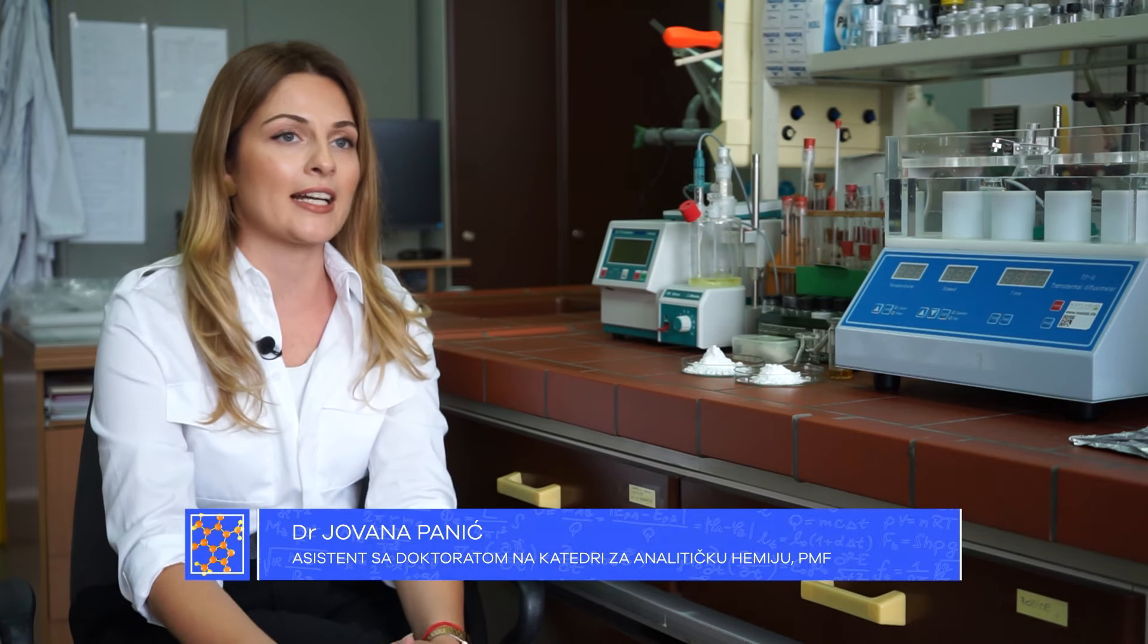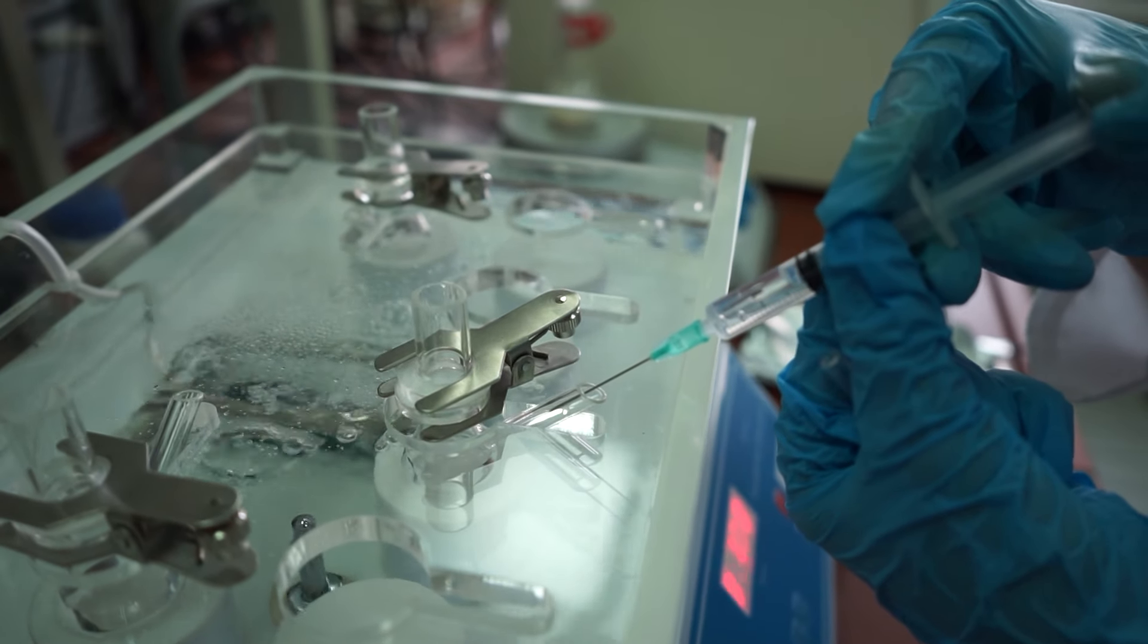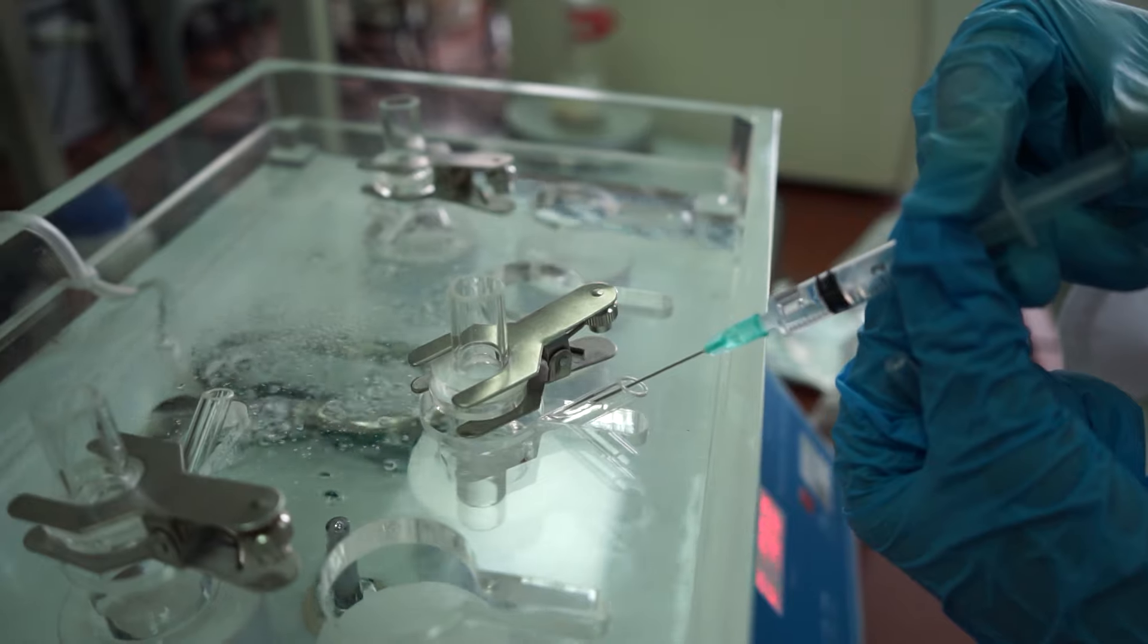Ionske tečnosti s druge strane koriste organske jone koji su različitih dimenzija, različitih oblika, i oni ne mogu blisko da priđu jedno drugom, ne mogu da ostvare jake interakcije i ostaju tečni na nižim temperaturama, prvenstveno na sobnoj temperaturi. To možemo da zamislimo kao zidanje zida. Kada zidamo zid od pravilnih cigli možemo čvrsto da napravimo stabilan zid - to su kao soli. A ukoliko uzmemo kamenje različitih oblika i pokušamo da sagradimo zid, to neće biti stabilno i to će se srušiti. Tako ne može da se napravi čvrsta kristalna rešetka naših ionskih tečnosti i ostaju tečni na sobnoj temperaturi.